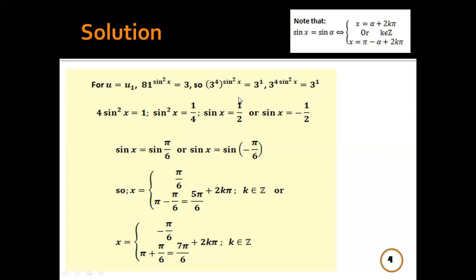We know that 1/2 = sin(π/6) and −1/2 = sin(−π/6). Note that if sin x = sin α, then the solutions are x = α + 2kπ or x = π − α + 2kπ, where k is an integer.